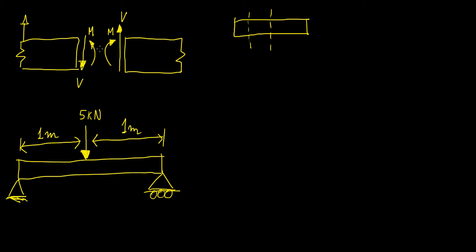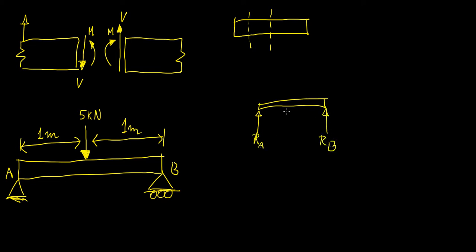To actually draw a shear force and bending moment diagram, the first thing you need is to know all the forces acting on the system, including the reactions at the supports. So we're going to call the support points A and B and find the reactions at those points. We have this free body diagram with reaction A and reaction B. We're going to ignore the horizontal reaction at the left-hand support because there are no horizontal forces acting on this system.